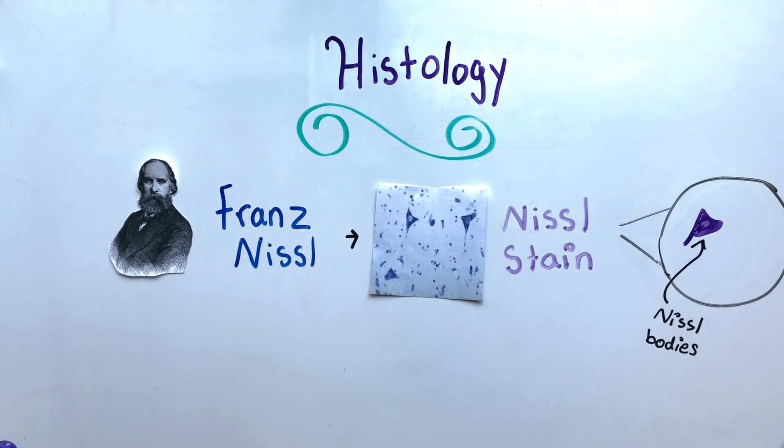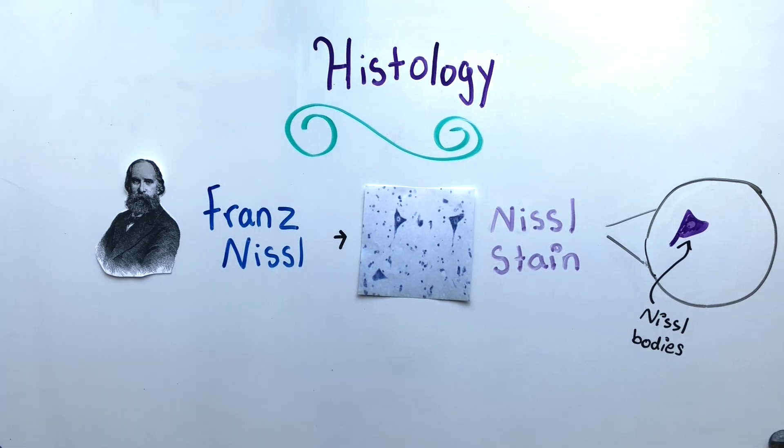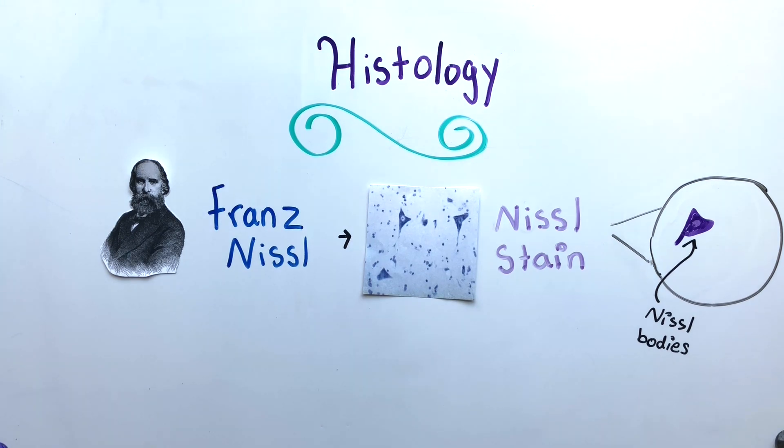Nissel stains can help distinguish between neurons and glia, which support and nourish neurons, as well as identify the arrangement of neurons. This arrangement of neurons in the brain is called cytoarchitecture.